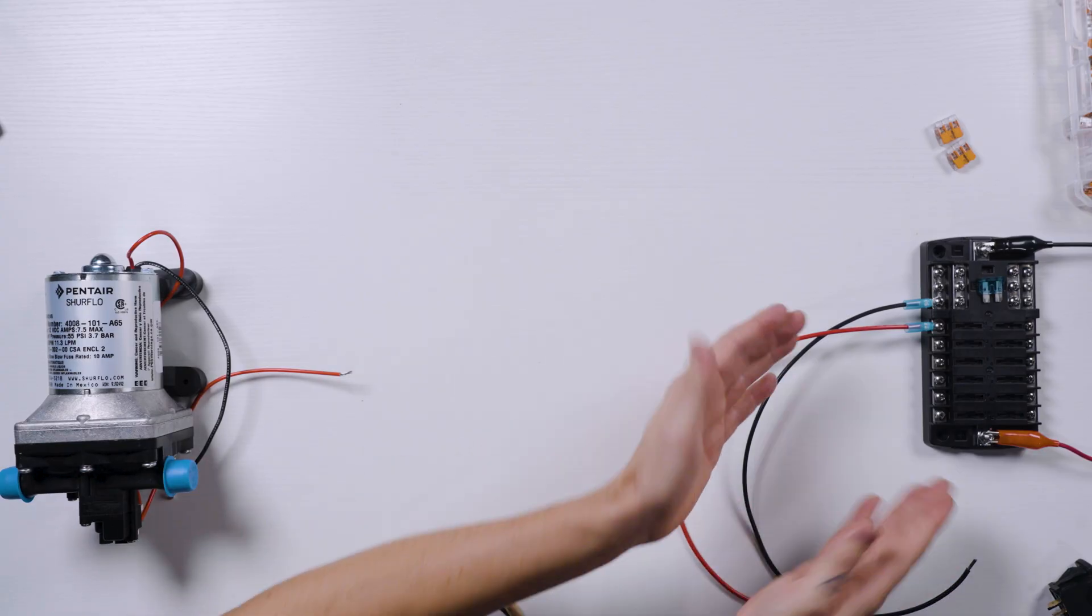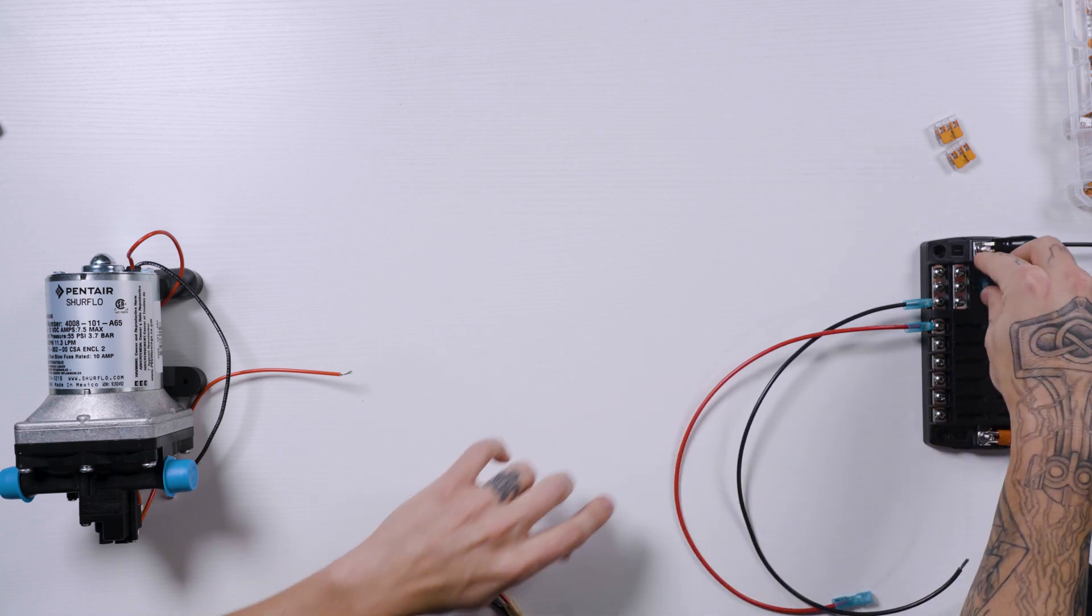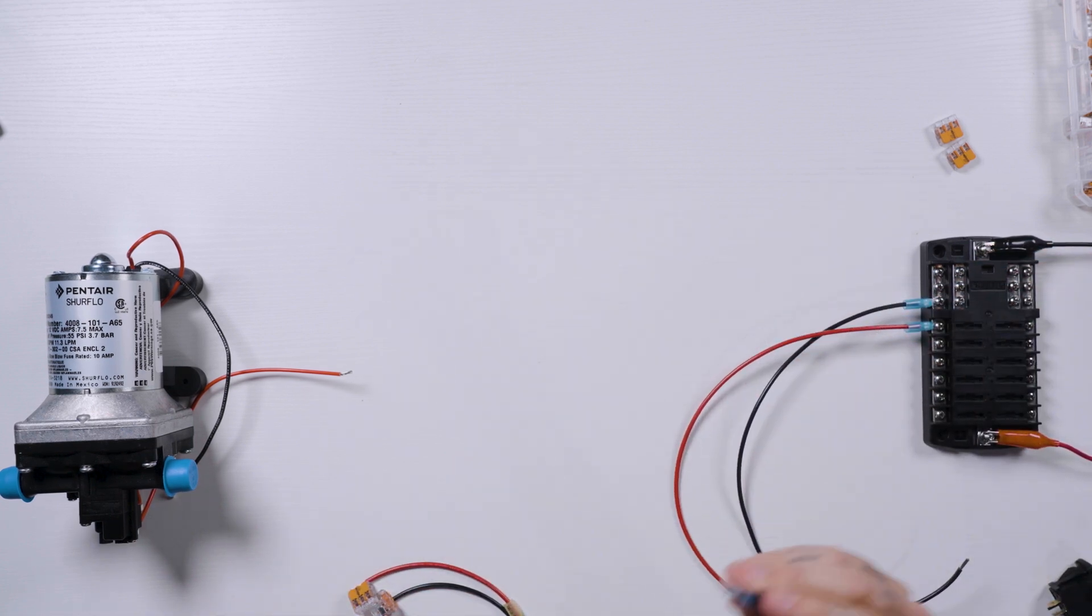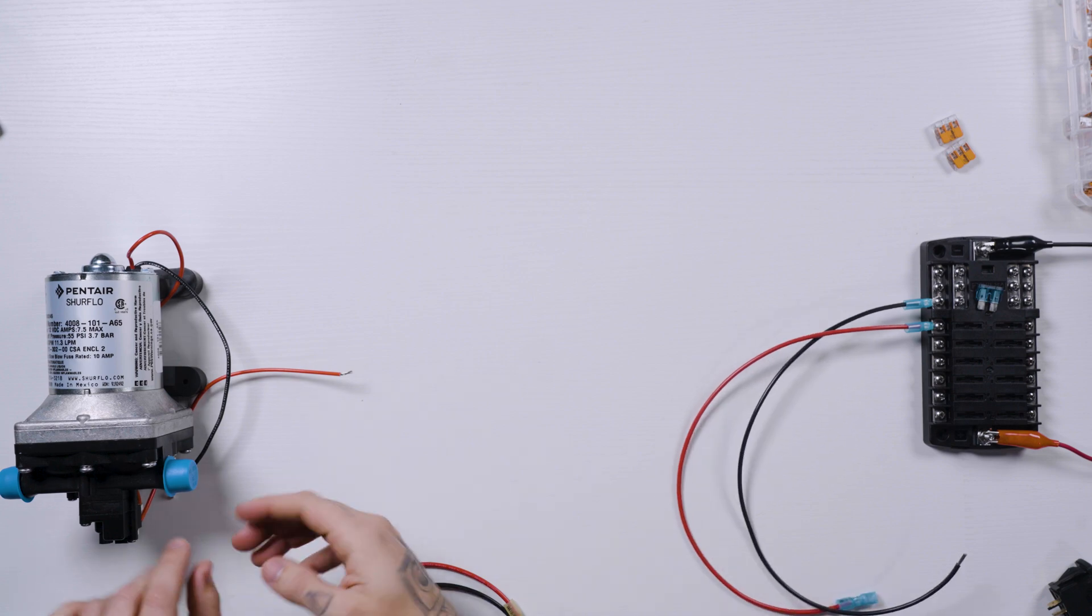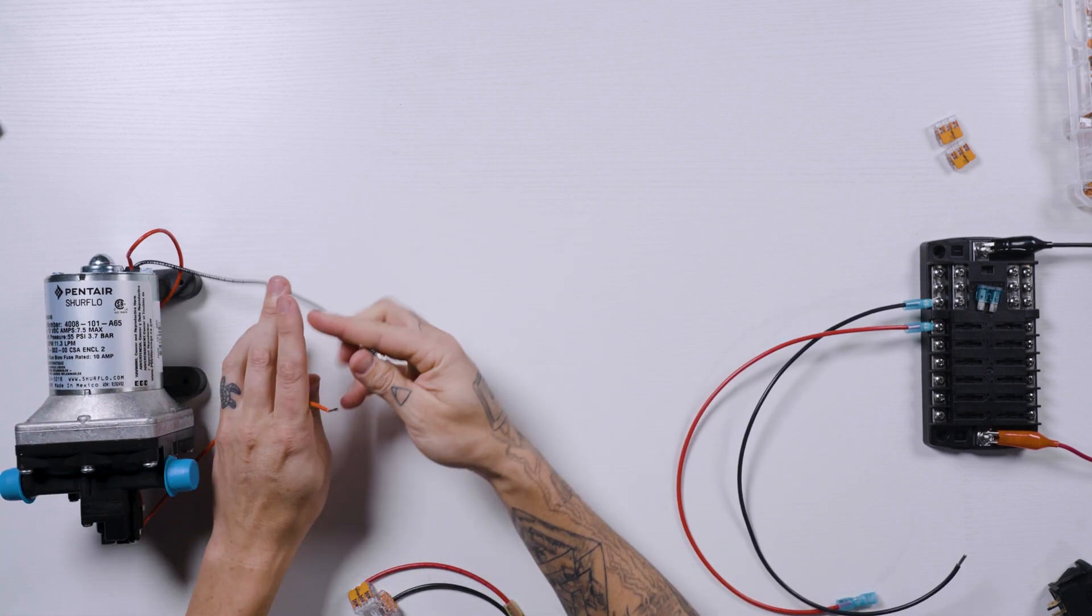We have our two main components here. We have our fuse block where power is being delivered from, and I've already pulled the fuse out of the fuse block, so we're not working with live wires. Over on the water pump side, pretty straightforward and simple.